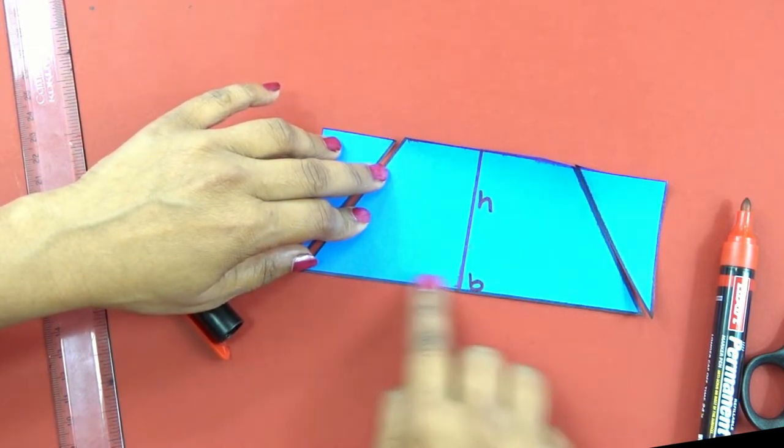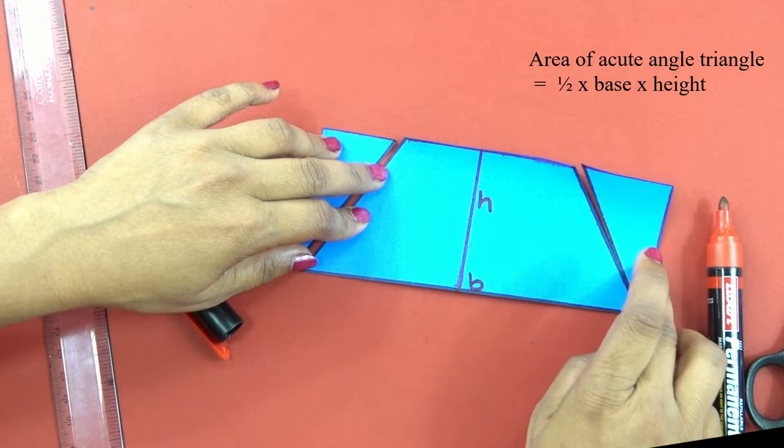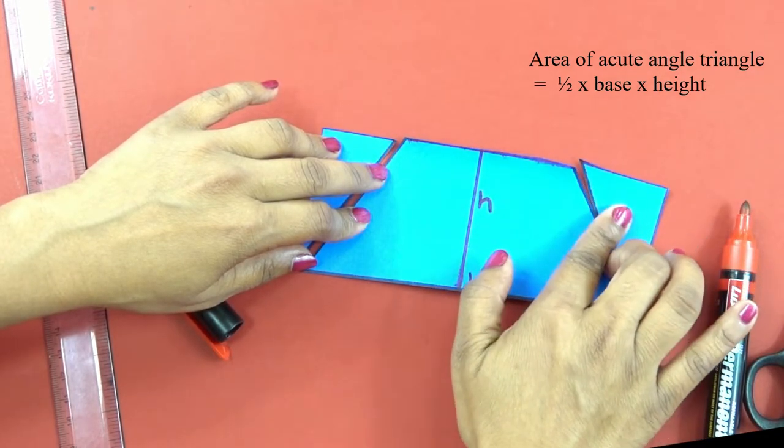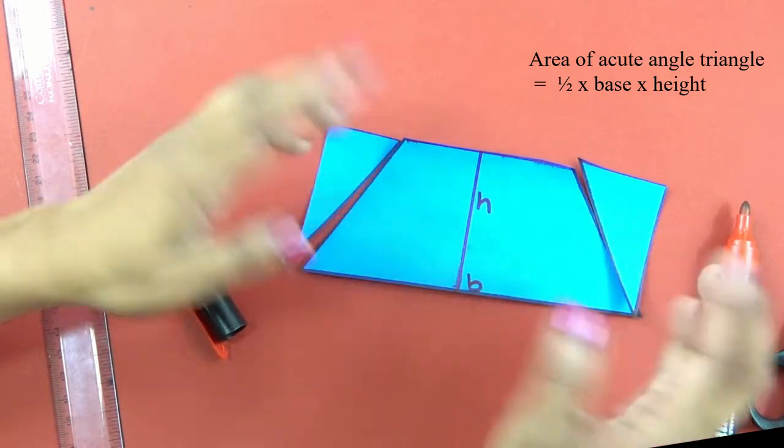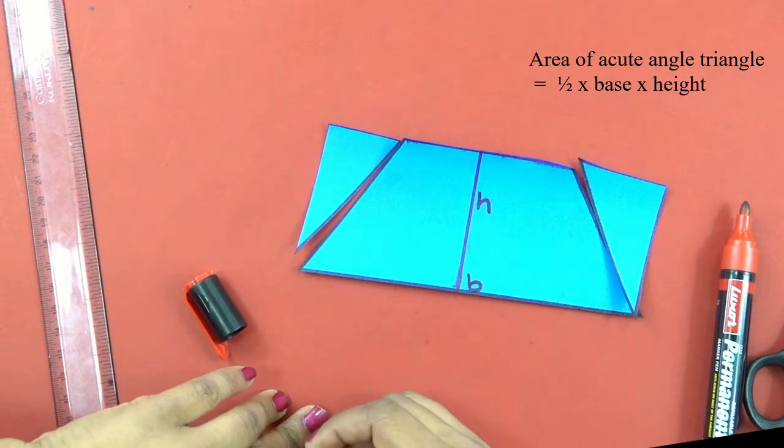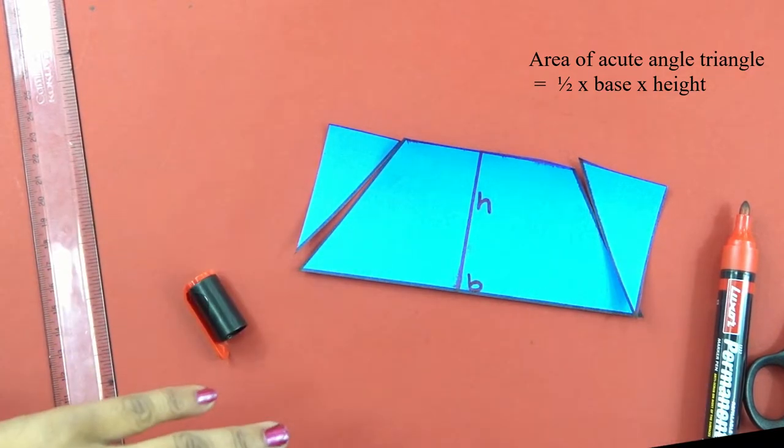base as the base of the triangle and its height as the half of the height of the triangle. Hence, we can prove that area of this triangle, acute angle triangle, is half base times height.